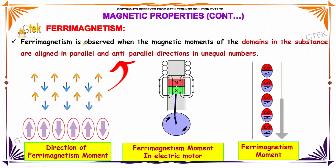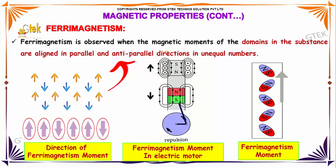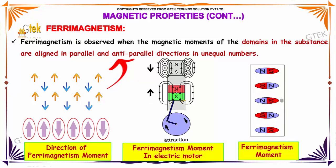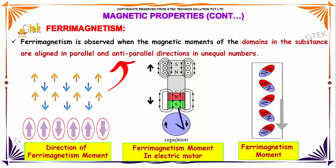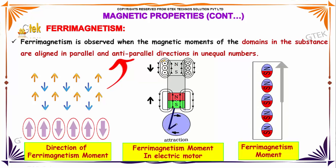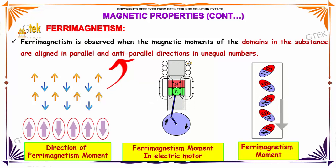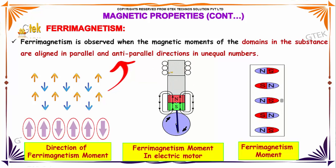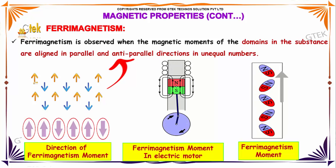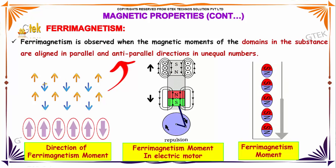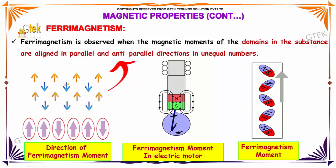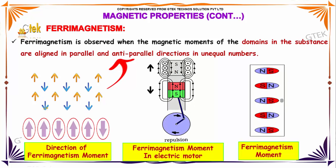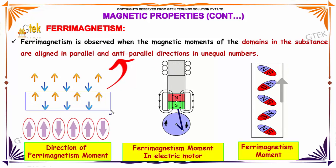Ferrimagnetism is observed when the magnetic moments of the domains in the substance are aligned in both parallel and anti-parallel directions in equal numbers — one, two, one, two — this is how.